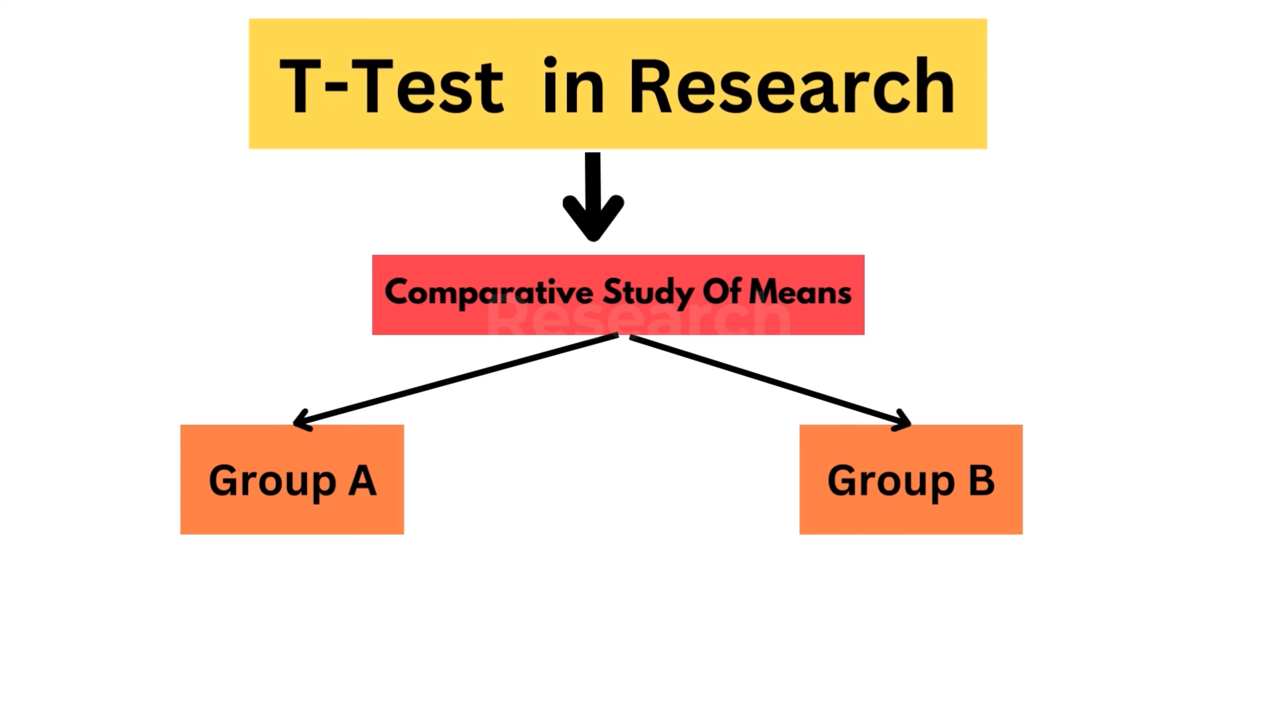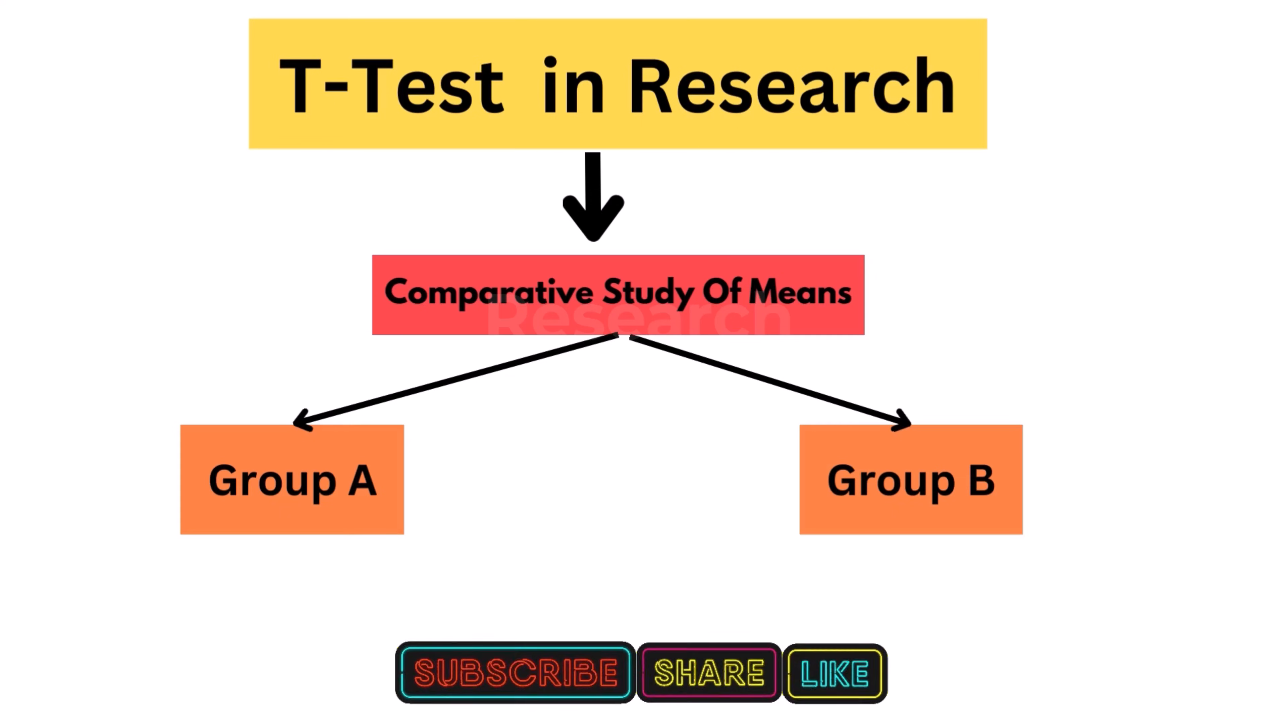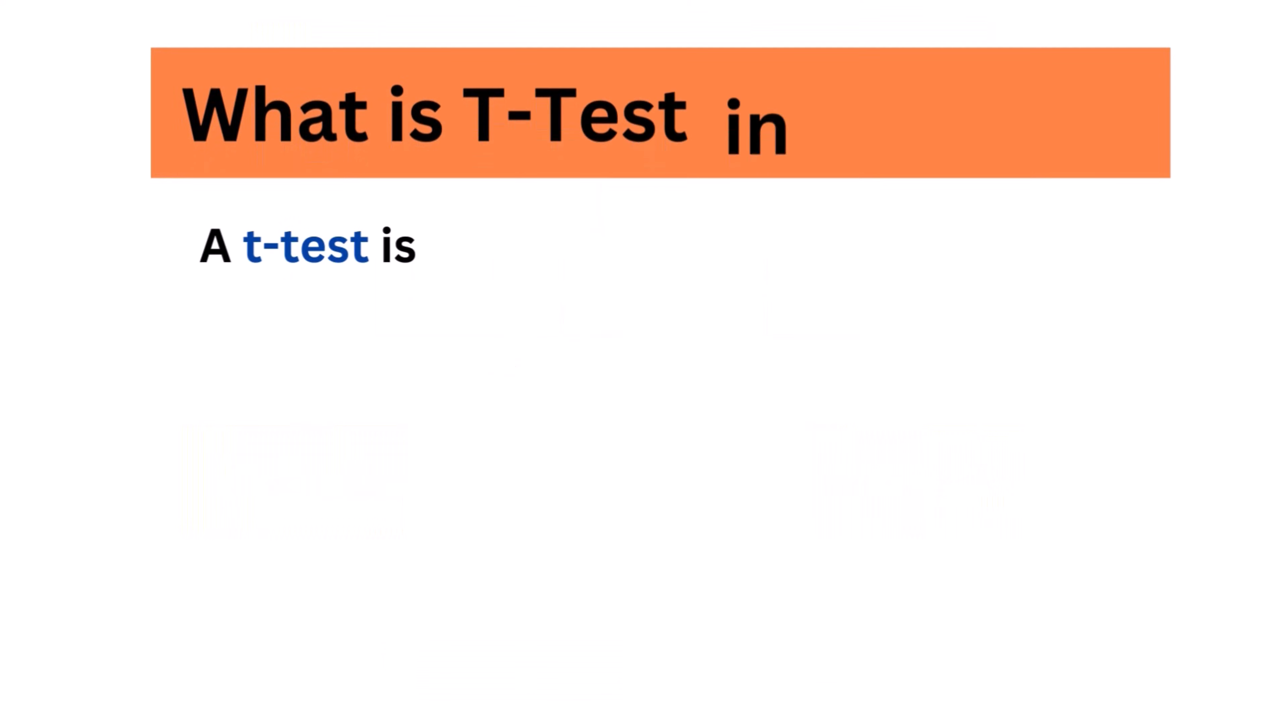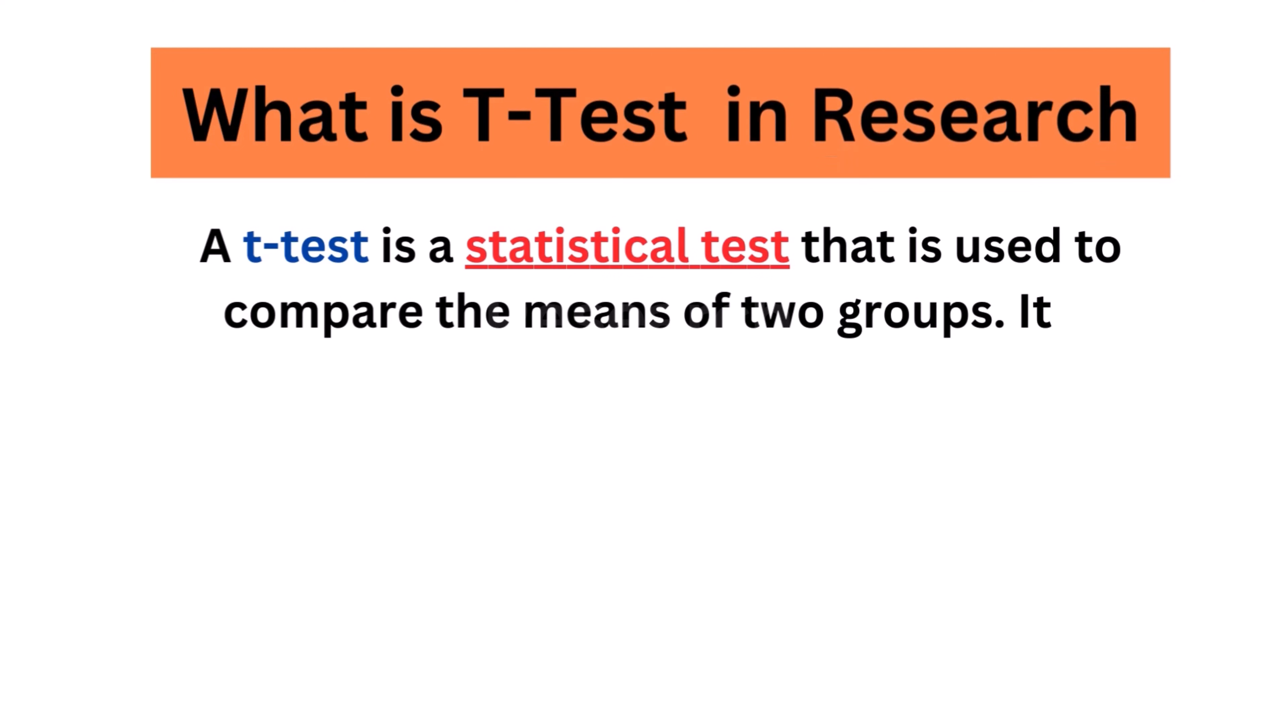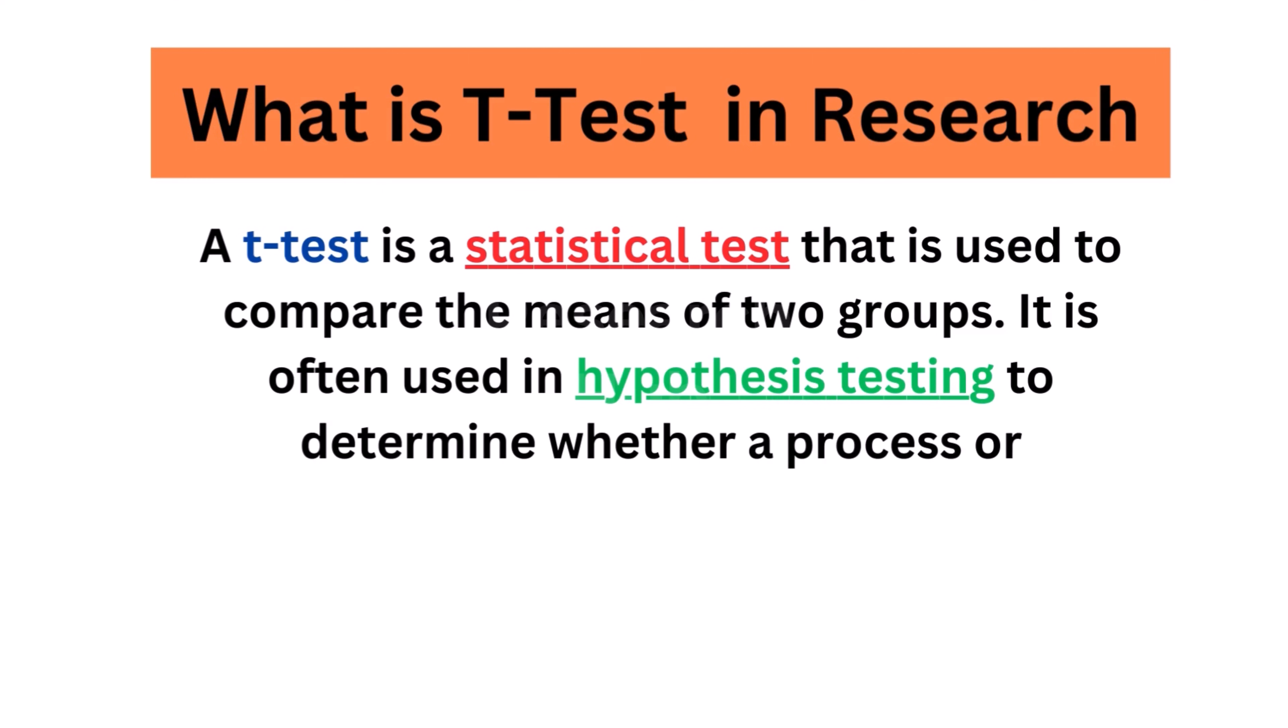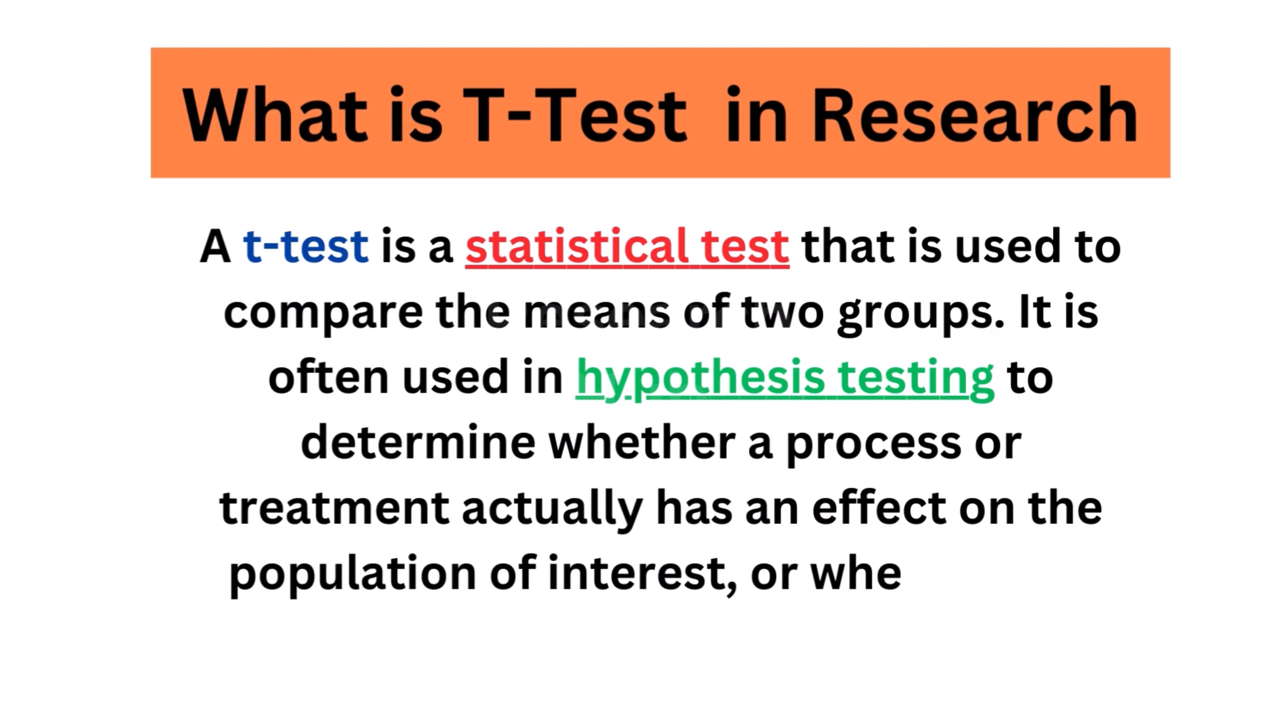It is a statistical method in which samples are chosen randomly, there is no perfect normal distribution. A t-test is a statistical test that is used to compare the means of two groups. It is often used in hypothesis testing to determine whether a process or treatment actually has an effect on the population of interest, or whether two groups are different from one another.